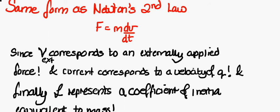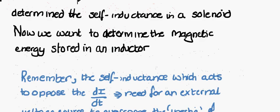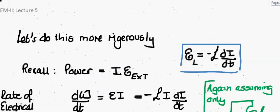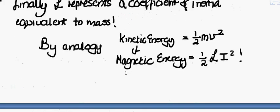If we were to integrate these expressions, we could determine what our energy is. In the case of Newton's second law, our kinetic energy would be half mv squared. Likewise by analogy, we would expect our magnetic energy to be half our inductance i-squared.